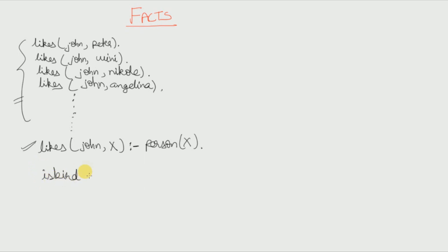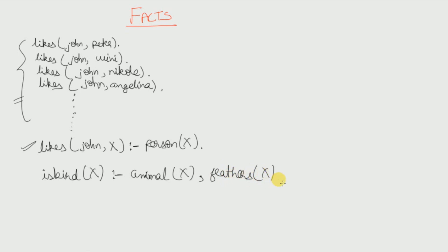In Prolog we write this bird rule as: bird(X) :- animal(X), has_feathers(X). That means X will be a bird if X is an animal and X has feathers. Now let's consider how we can define whether X is a sister of Y or not.